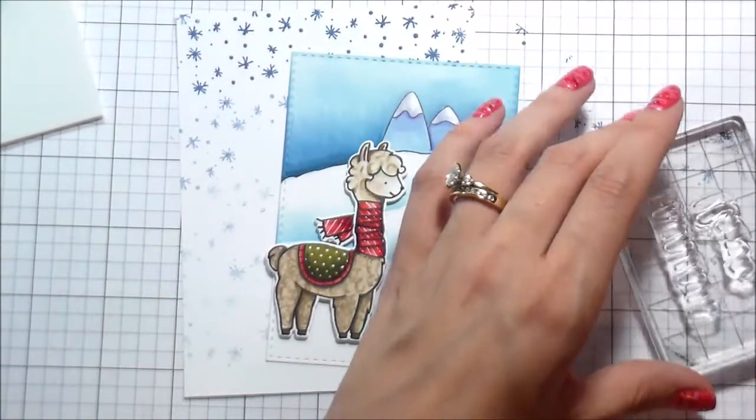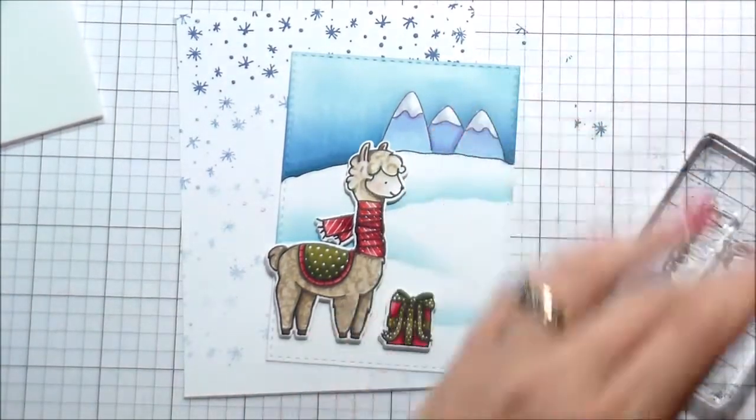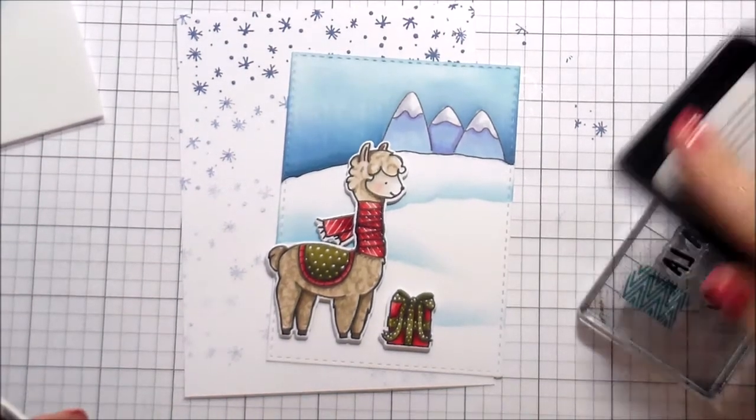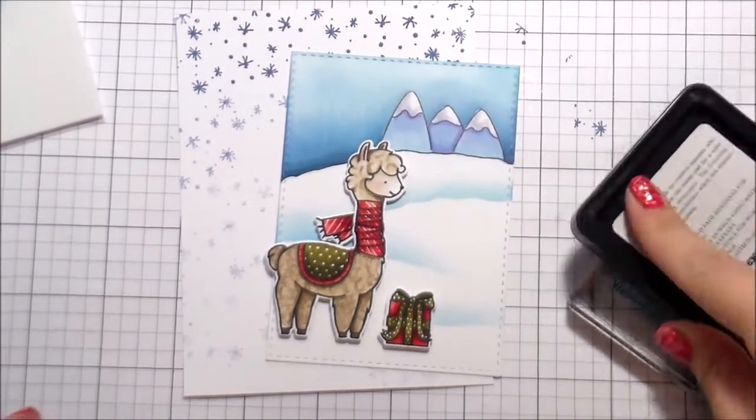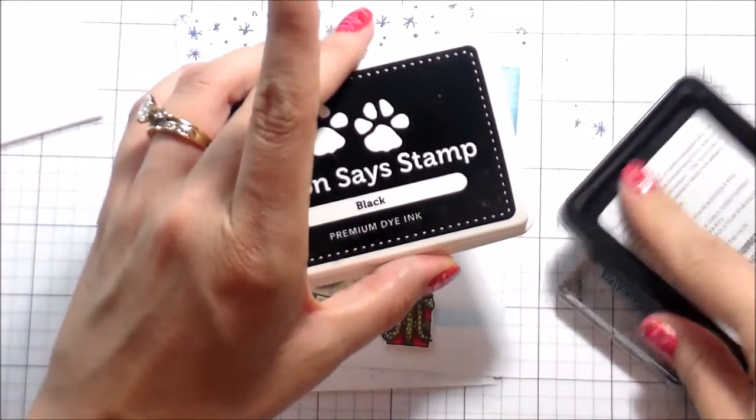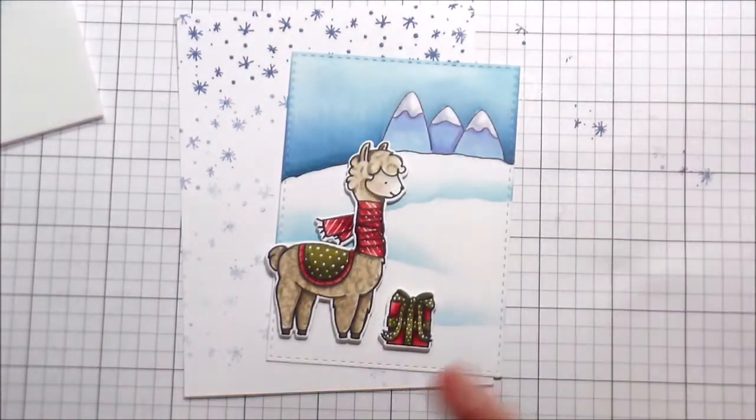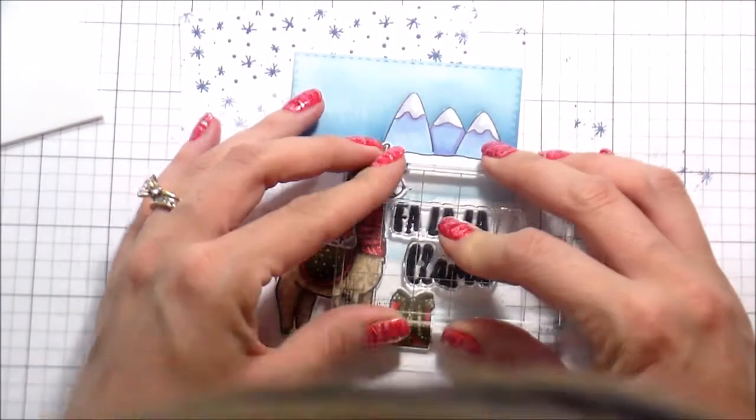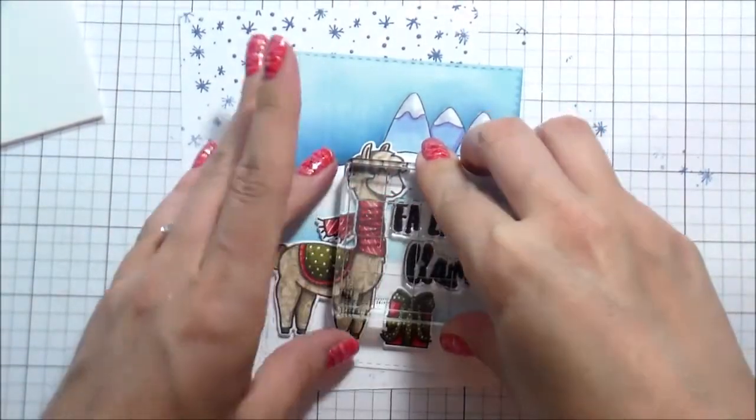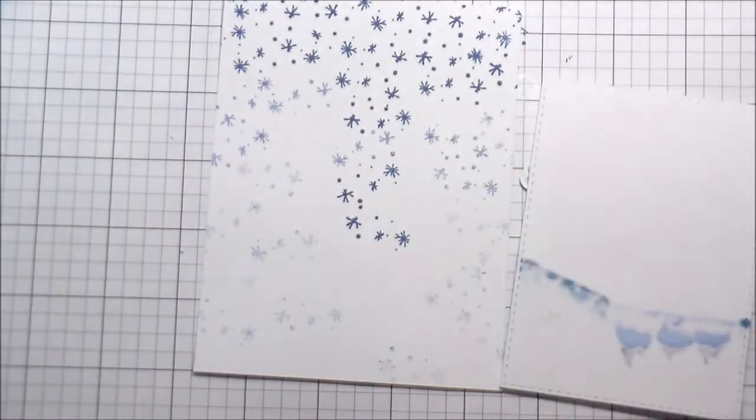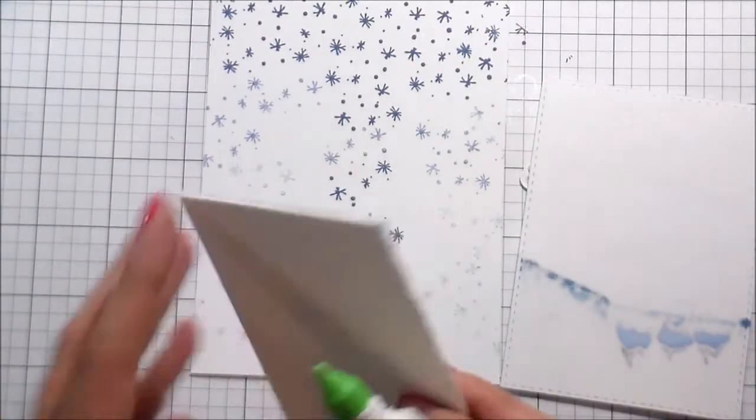Once I was happy with the background, I put the sentiment together. The sentiment originally says Fa La La La Lama, but I only had room for a Fa La La Lama. Wait, I said it three times. I only had room for two la's, people. That's what I'm trying to say. So I just masked off the last one with a piece of tape and then I stamped it down in some Simon Says Intense Black ink, which is a great ink for sentiments. It's nice and crisp.